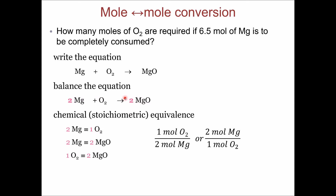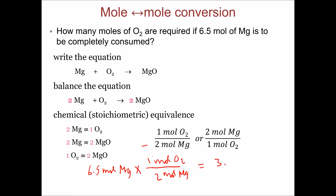For each ratio, we can have two possible conversion factors — either moles of oxygen on top or on the bottom. We have 6.5 moles of magnesium and want to find moles of oxygen, so we multiply by the conversion factor that has moles of magnesium in the bottom: one mole of oxygen to two moles of magnesium. This gives 3.25 moles of oxygen.